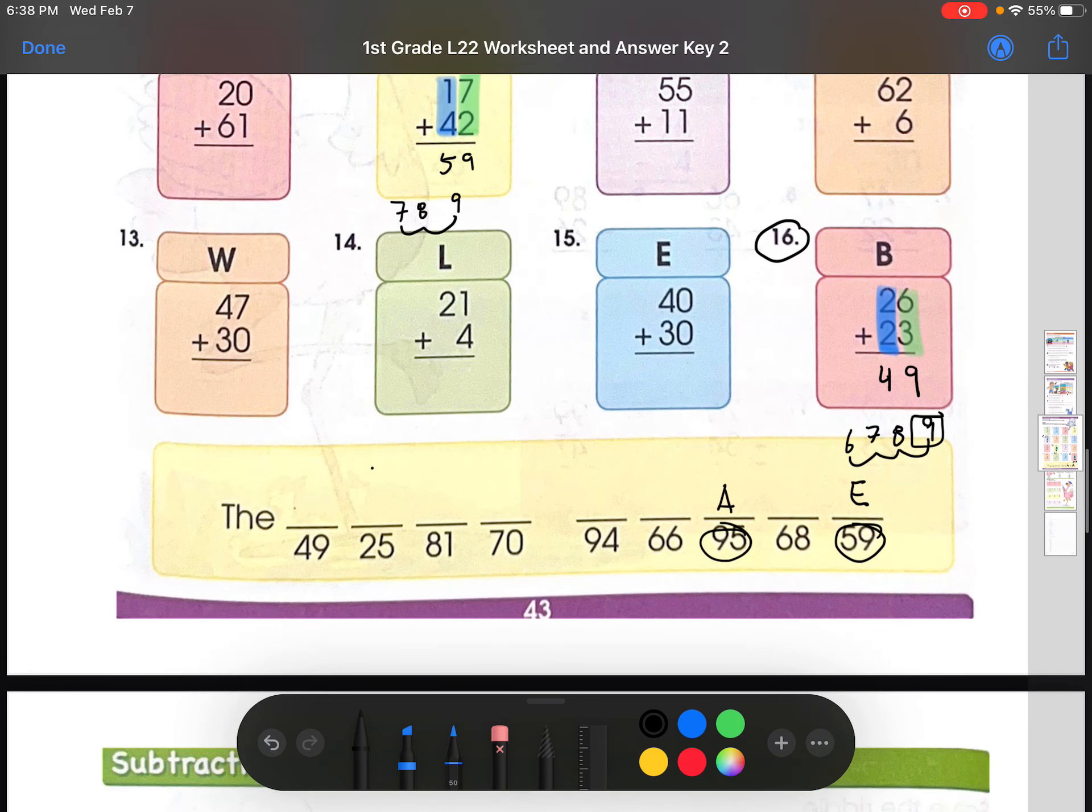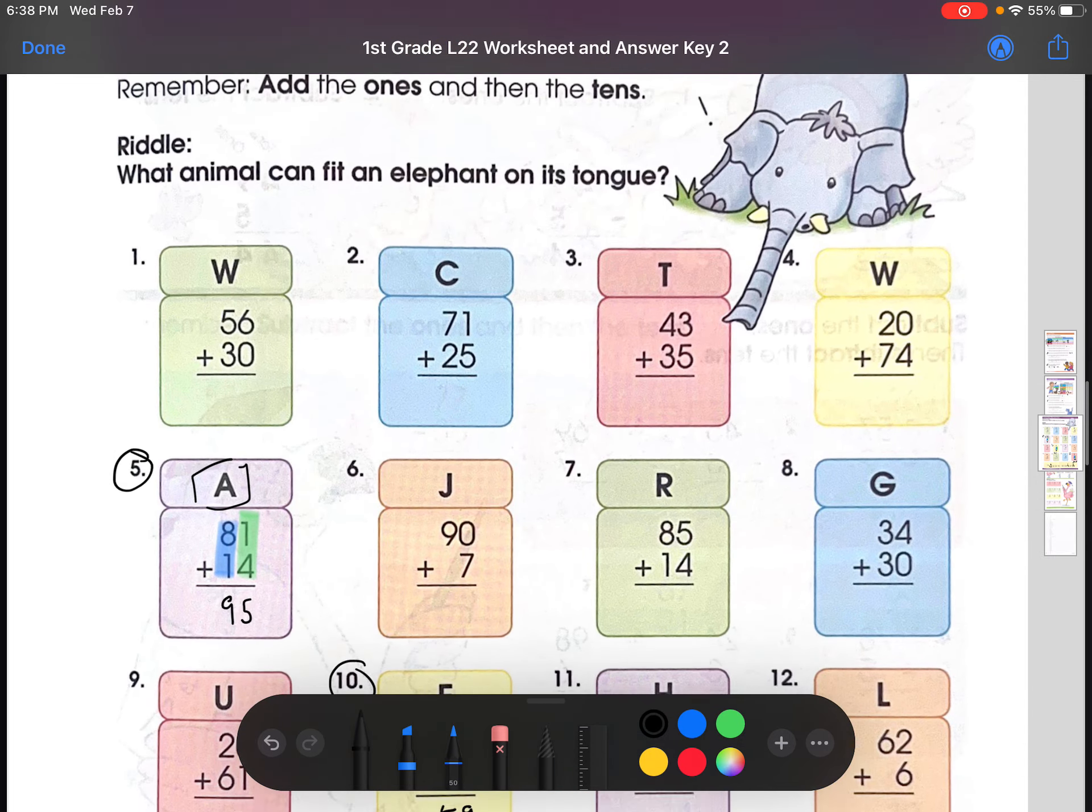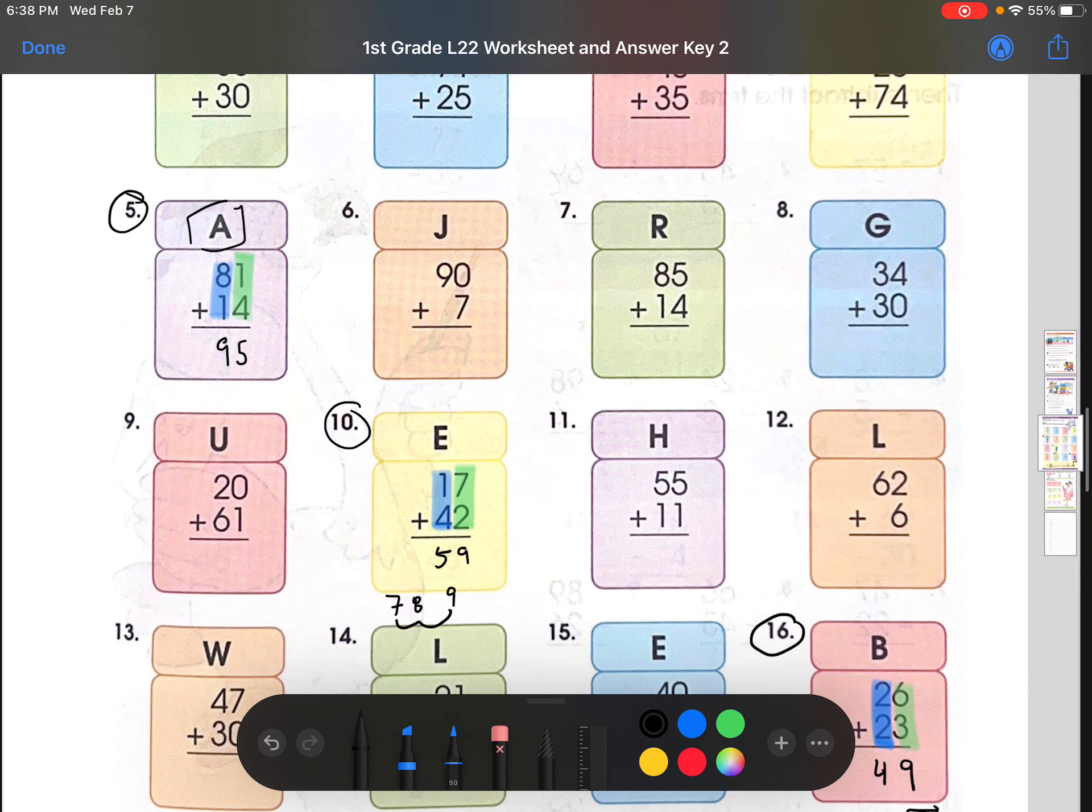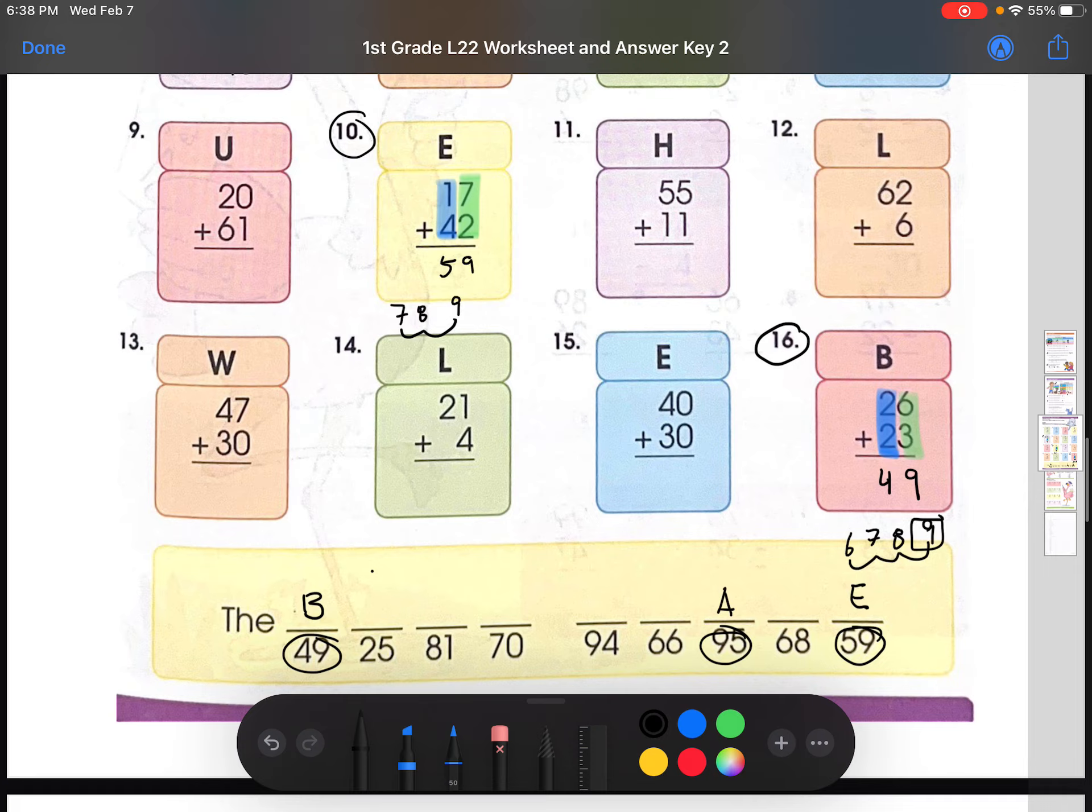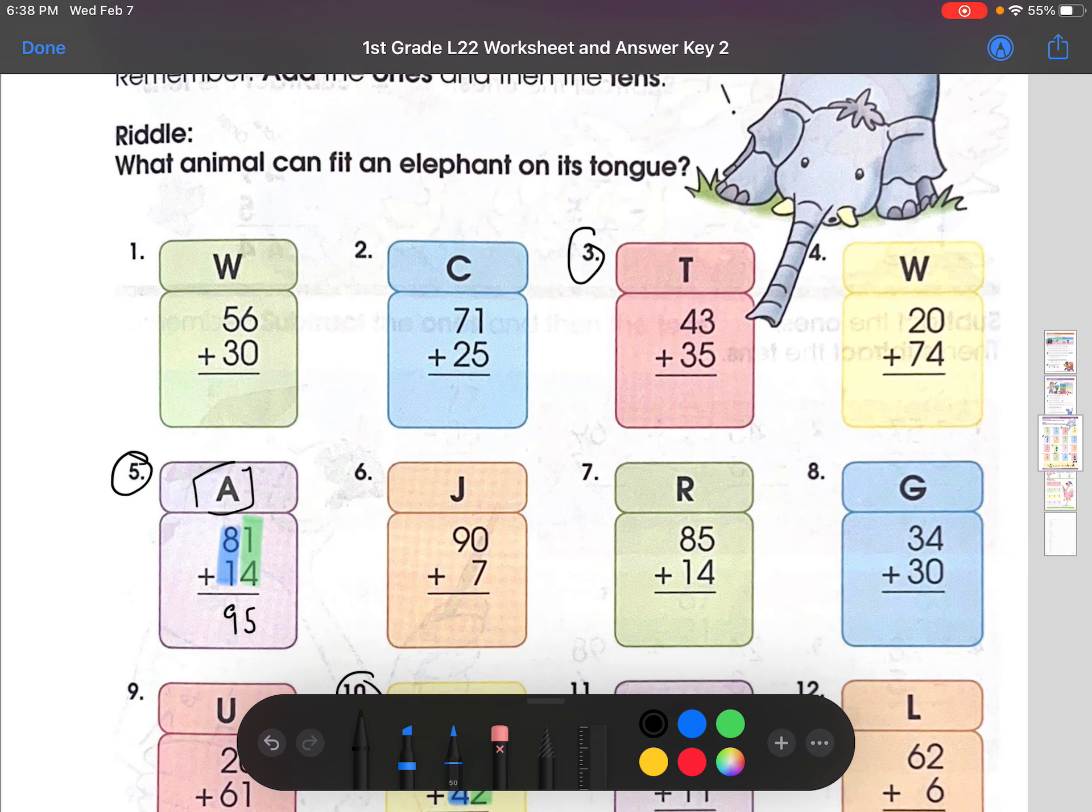Now we look down here at the answer. And there's a 49 right here. So B. And you guys will have to keep in mind that there are more problems than answers, which means you may not get one.